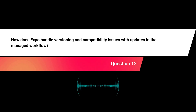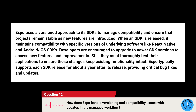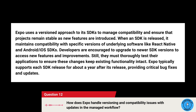How does Expo handle versioning and compatibility issues with updates in the managed workflow? Expo uses a versioned approach to its SDKs to manage compatibility and ensure that projects remain stable as new features are introduced. When an SDK is released, it maintains compatibility with specific versions of underlying software like React Native and the Android/iOS SDKs. Developers are encouraged to upgrade to newer SDK versions, but must thoroughly test their applications to ensure changes don't break existing functionality. Expo typically supports each SDK release for about a year after release, providing critical bug fixes and updates.